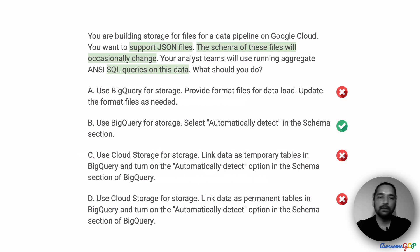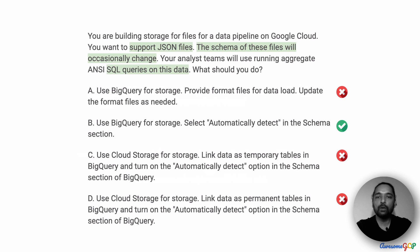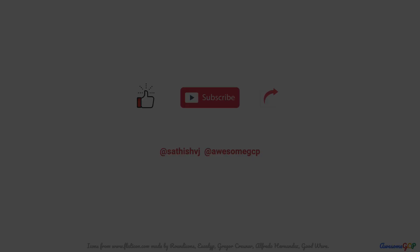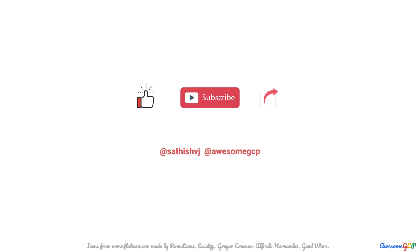Option B is to use BigQuery for storage and import the data with the schema chosen as auto-detect. As we saw, even with a changing schema, it is able to create the appropriate columns. Now it's time for you to like, share, comment, and subscribe — there's loads of great content coming up for learning Google Cloud and preparing for the certifications.